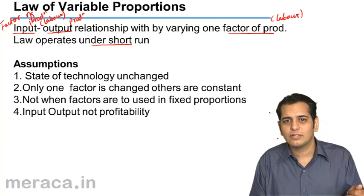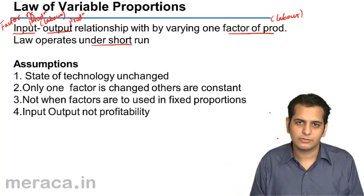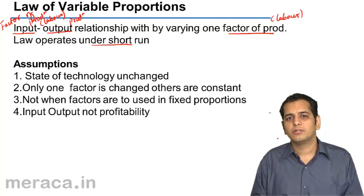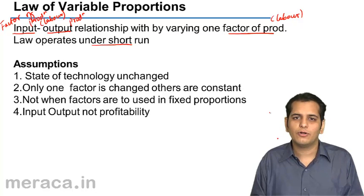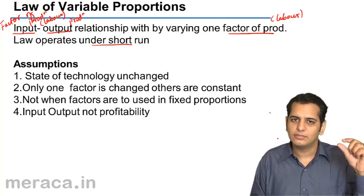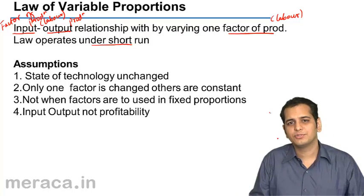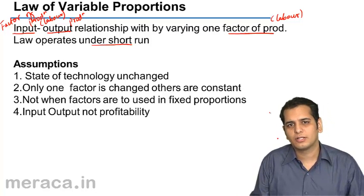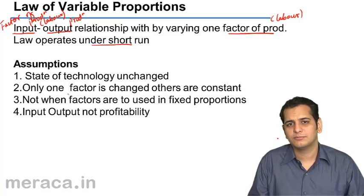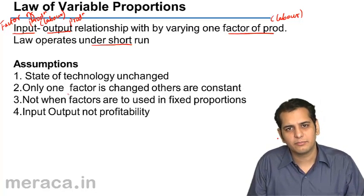If technology changes, you might be able to produce a larger quantity even when the factors are fixed, or even when you reduce the quantity of labor. That is what we call investment in technology, wherein the time and cost required for production is reduced. So technology remains unchanged. The second assumption is that only one factor is changed and the other factors of production remain constant. This is a requisite, and because this law operates under short run, we can only change one factor while others remain constant.